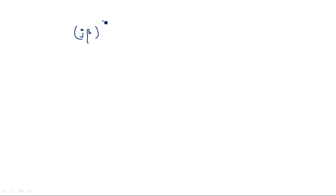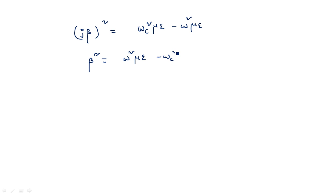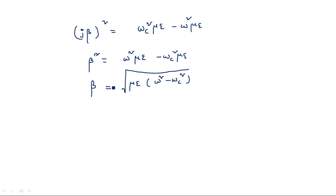Now substituting back into the main equation: (j beta)² equals gamma², and since alpha equals 0, we get minus beta² equals omega_c² mu epsilon minus omega² mu epsilon. Rearranging, beta equals the square root of mu epsilon times (omega² minus omega_c²). This expression is the same starting point as for the phase velocity calculation.